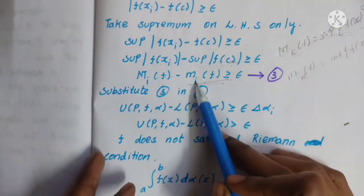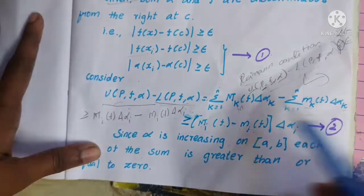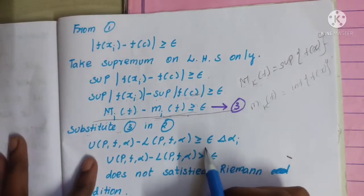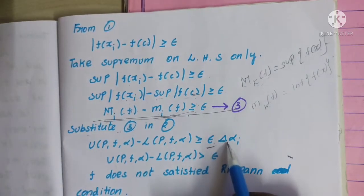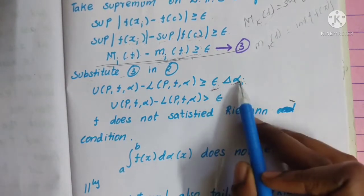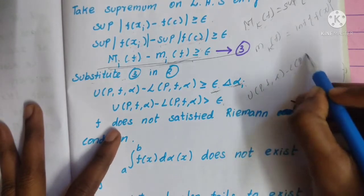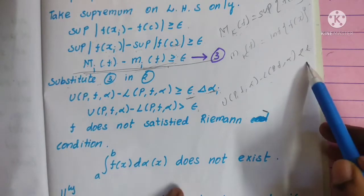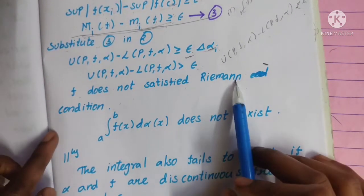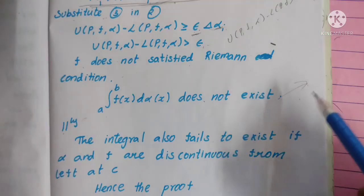Substituting equation 3 into equation 1: capital M_i(f) minus m_i(f) >= epsilon. Substituting this value, we get epsilon · Δα_i. Since epsilon and alpha are constants, U(P, f, α) - L(P, f, α) >= epsilon · Δα_i. This is greater than epsilon, so the Riemann condition U - L < epsilon is not satisfied. Therefore f does not satisfy the Riemann condition, and the integral ∫_a^b f(x) dα(x) cannot exist.